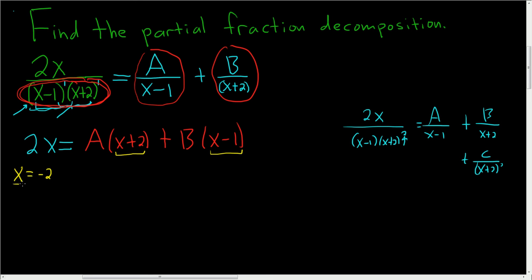So x is equal to negative 2, so we get 2 times negative 2 equals... well, here we just get A, negative 2 plus 2. So it's just 0. Normally, you don't write it. You just know it's 0, so you just put 0, plus B times (negative 2 minus 1). So this is negative 4, this is 0, so I won't write it, equals negative 3 times B, so negative 3B. That means that B is equal to 4 thirds.